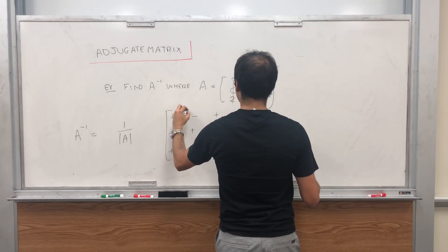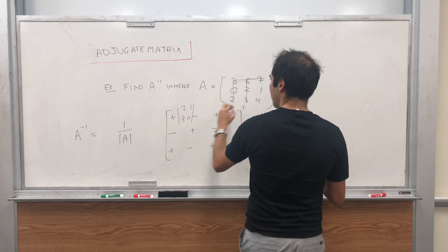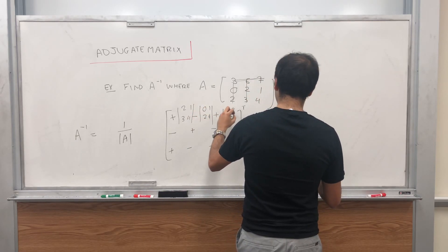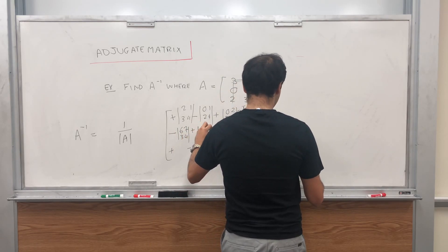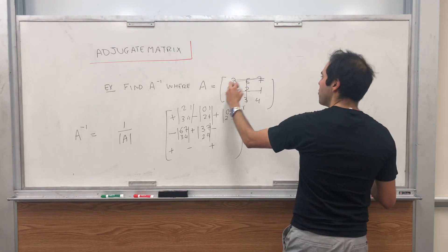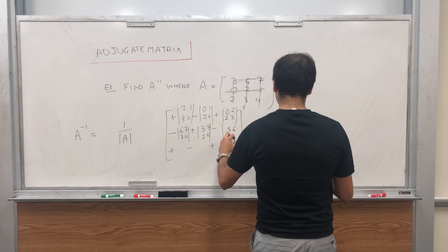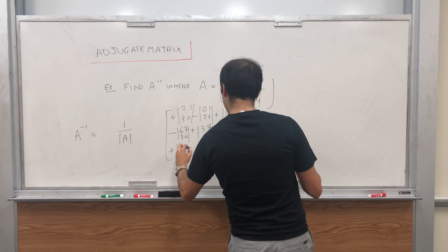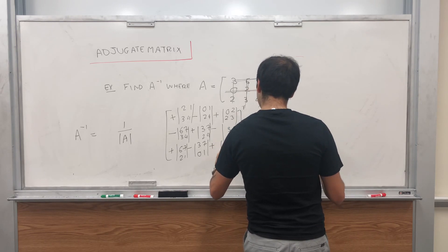So here you get the determinant of [2,1; 3,4], then the determinant of [0,1; 2,4], then [0,2; 2,3], then [6,7; 3,4], [3,7; 2,4], and so on — you just do the Bomberman (minor) everywhere, getting entries like [3,6; 2,3], [6,7; 2,1], [3,7; 0,1], and [3,6; 0,2].